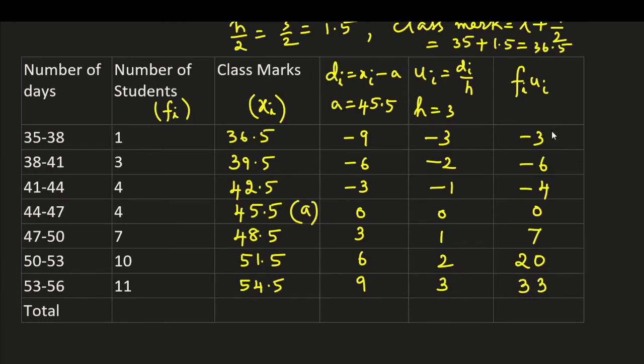Now the sum of negative values is minus 13. The sum of positive values, here it is 40 plus 20, it is 60. So sigma fi ui, we are getting, this is 60 minus 13 is 47.